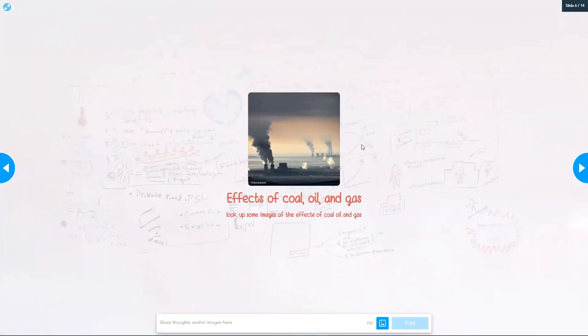On this collaborate I want you guys to find some images of different effects of coal, oil, and gas—like pollution-wise, what does it do? If you can find some pictures of an oil spill or cities that are covered in smog, that kind of thing.